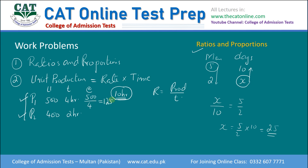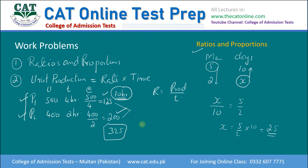तो इसका rate आ गया 125 unit per hour। दूसरे person का rate: unit over time is equal to 400 over 2 = 200 unit per hour। अगर हम इन दोनों का combine देखें तो एक घंटे में 325 unit बनेंगे। 10 hours में total production = rate × time = 325 × 10 = 3250 units।